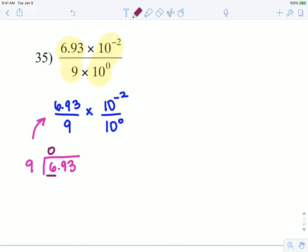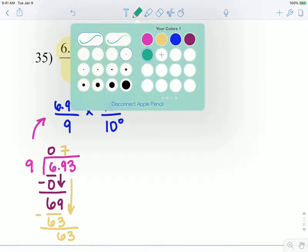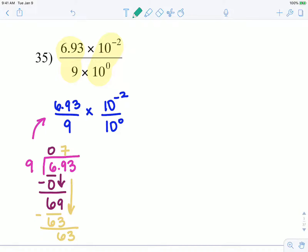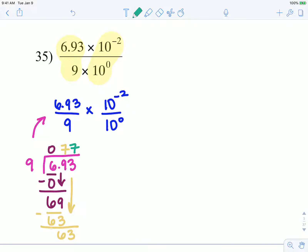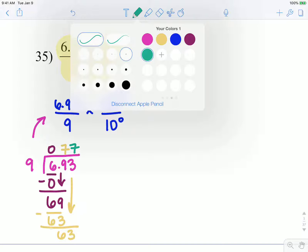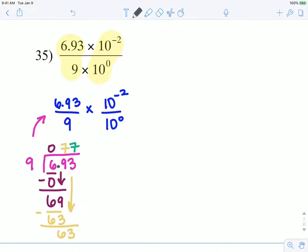Nine goes into 69 seven times. Seven times 9 is 63, subtract we get 6, bring down that 3. And 9 goes into 63 seven times evenly, no remainder. Now this decimal that's already here just moves right up to the top between the 0 and the 7.